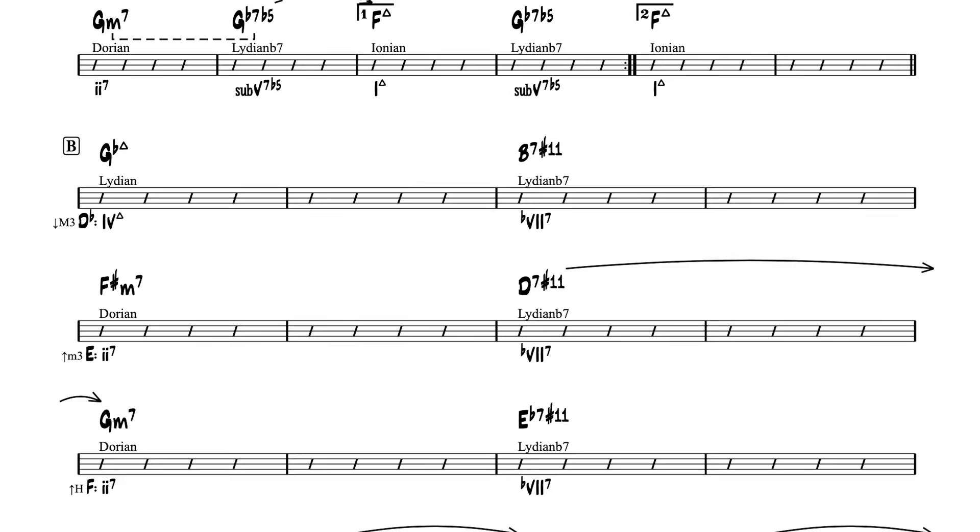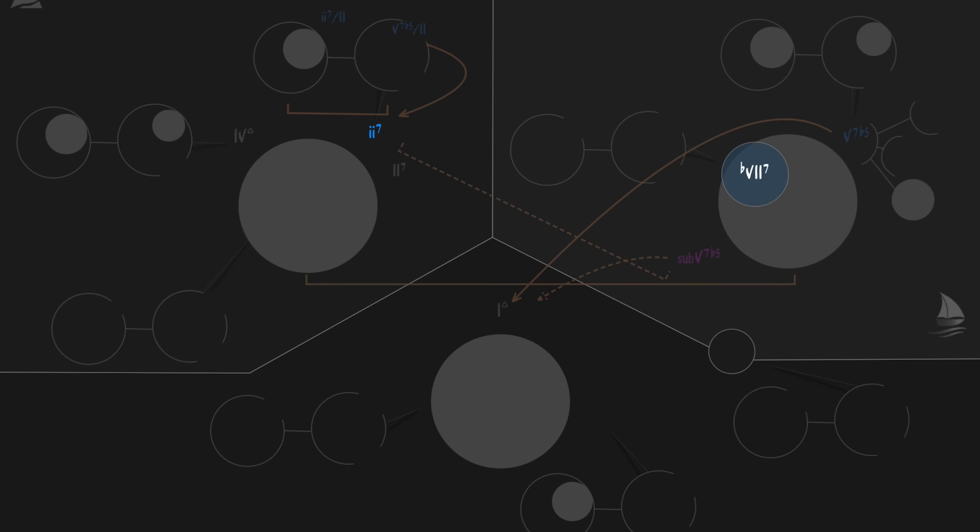And Jobim gets back to the original key by modulating first a minor third up and then a half step up. When we look at this sequence in the map, it becomes obvious what's going on in the B section. The harmonic movement is exactly the same in all three iterations of the sequence, from the sub-dominant to the dominant, but never actually resolving to the Imaj7 of the current key. It's simply genius.